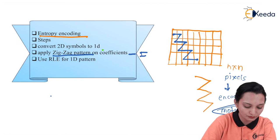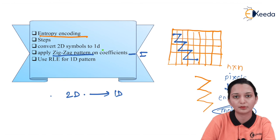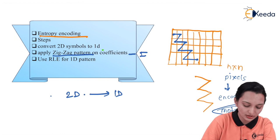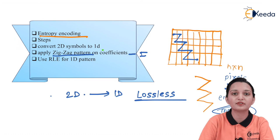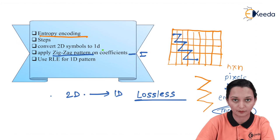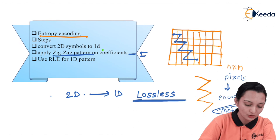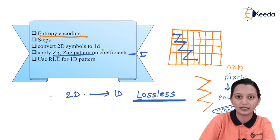After applying RLE, we reduce the size of the data again. Here, lossless algorithms such as Huffman coding or RLE are specifically used. Why lossless? Because quantization has already reduced the actual data, and now we cannot afford to lose data during transmission, since decoding requires the maximum data equal to the input. So lossless techniques — Huffman coding and RLE — are used. If the output is two-dimensional, convert it to one-dimensional, then apply RLE on the one-dimensional pattern.